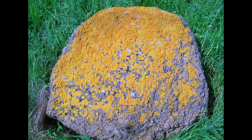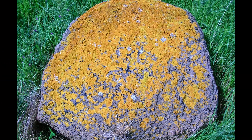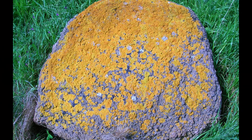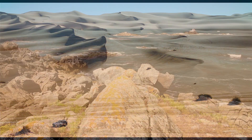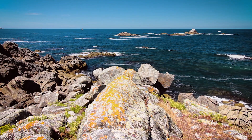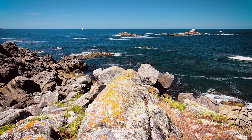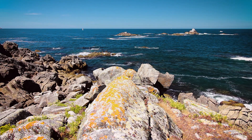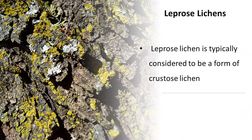Crustose lichens are often found in harsh and challenging environments such as deserts and high-altitude regions, where their low profile helps protect them from harsh weather conditions. A leprose lichen is typically considered to be a form of crustose lichen.